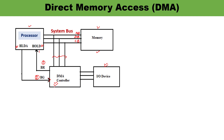When the DMA controller is done with its task, it will release the bus request — sending a low logic (0) to the processor. As soon as the processor receives low logic on the hold pin, it knows the DMA controller's work is done and no longer requires the system buses. The processor then sends low logic on the hold acknowledgement pin, meaning the bus grant signal is removed and the system buses are again with the processor.